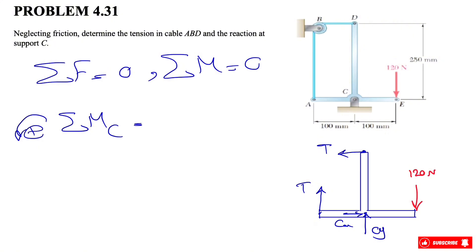Starting with tension at point A - the moment is clockwise so negative T times the distance of 100 millimeters. Dividing by 1000 to get it in meters gives 0.1 meter, and here 0.25 meters.